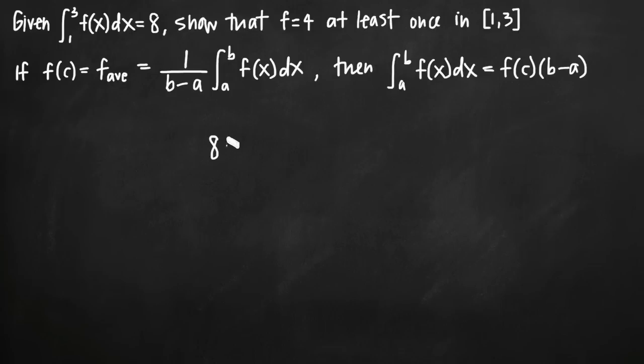So we say 8 is equal to f of c, the value of the function at point c. We know that our interval is 1 to 3, so we're going to multiply by 3 minus 1. All we're doing here now is solving for f of c.